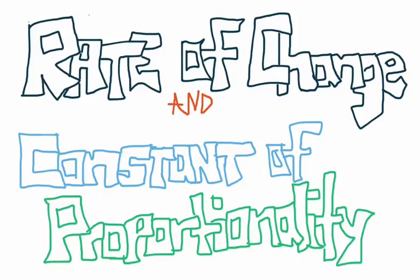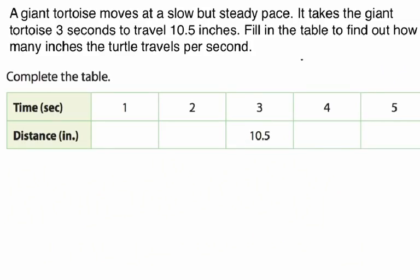Rate of change and constant of proportionality. So we're going to start with this word problem. A giant tortoise moves at a slow but steady pace. It takes the giant tortoise three seconds to travel 10.5 inches. Fill in the table to find out how many inches the turtle travels per second.